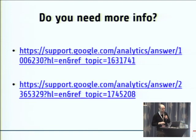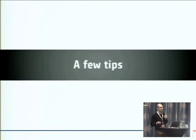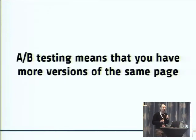If you need more information about how Google Analytics experiments work behind the scenes, you can find them at two links provided. There you can also find how the algorithm works to determine the winner of the test. Just a few tips about AB tests. We have to think about the fact that we are having multiple versions of the same page, which may be a problem for SEO.